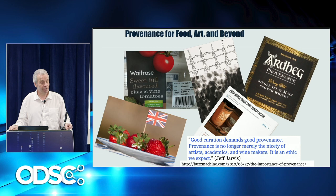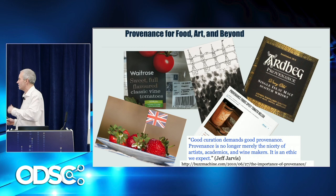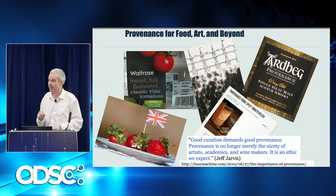A lot of things have changed since then. A key quote says: good curation demands good provenance. Provenance is no longer merely the nicety of artists, academics, and wine makers or food producers. It is an ethic that we expect. And that has really changed over the years.